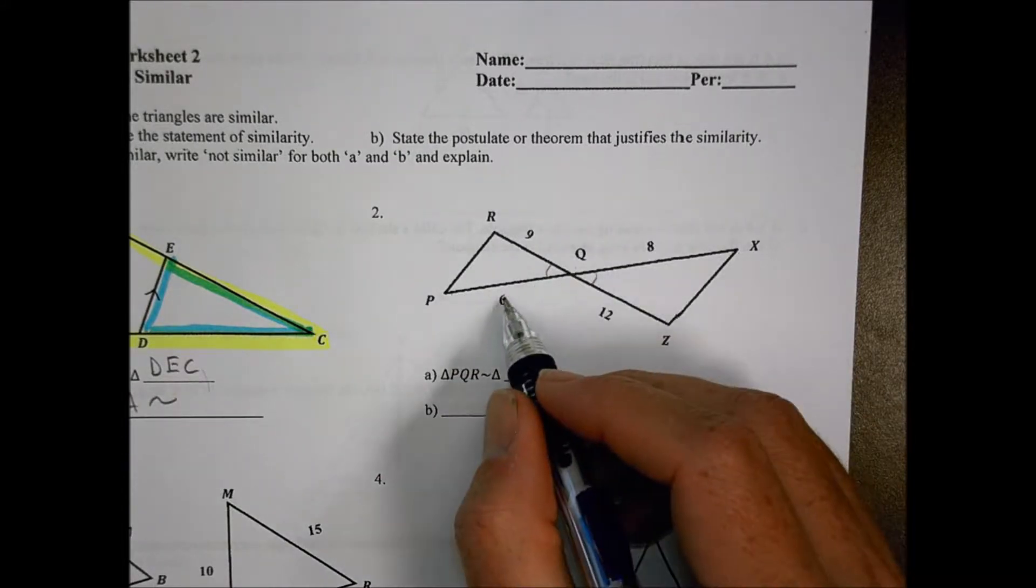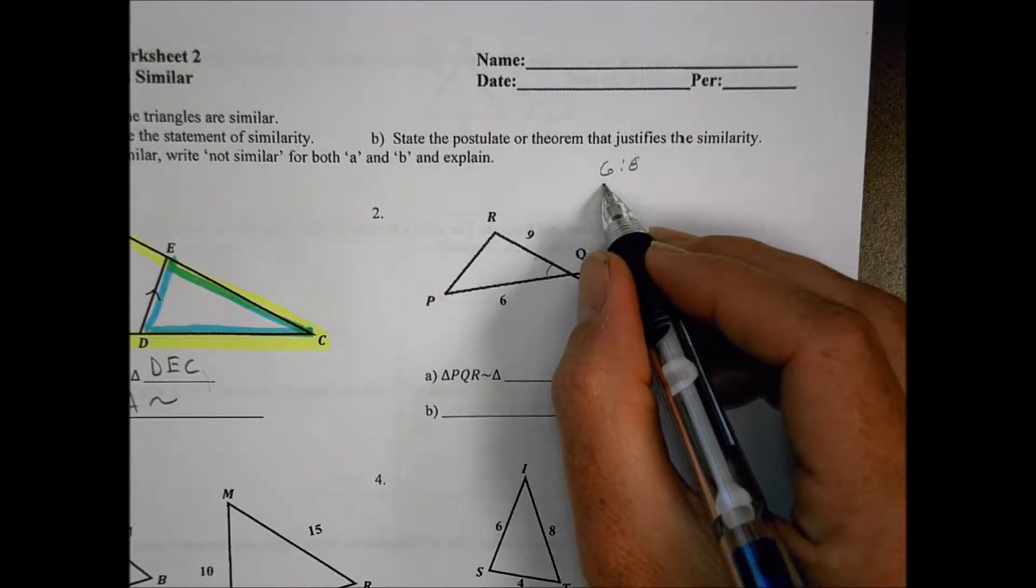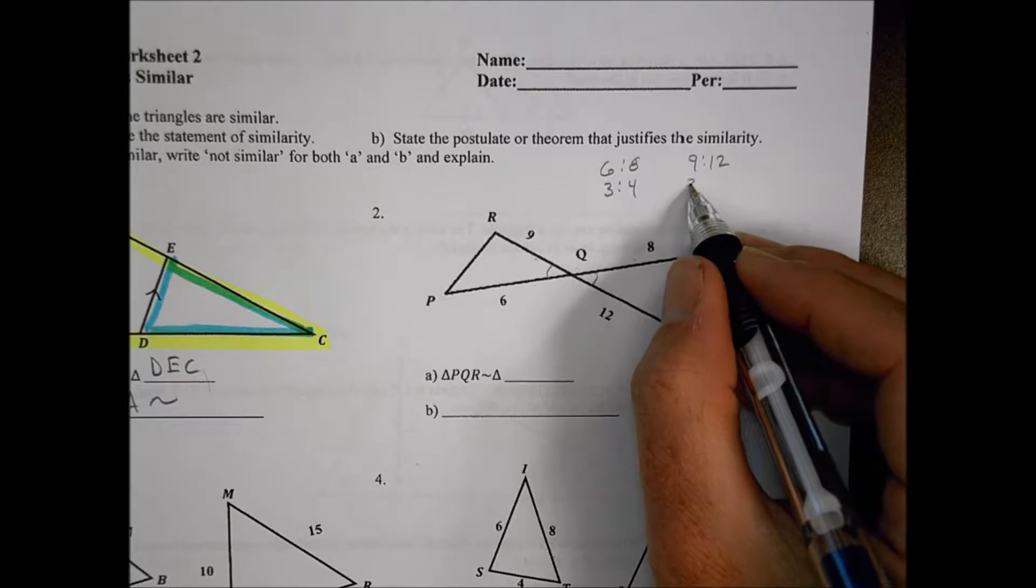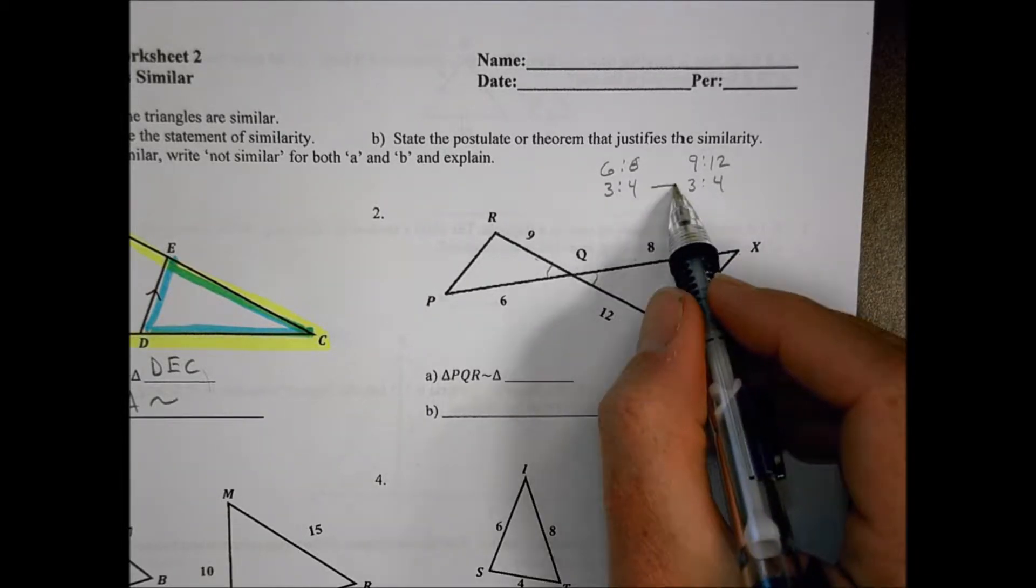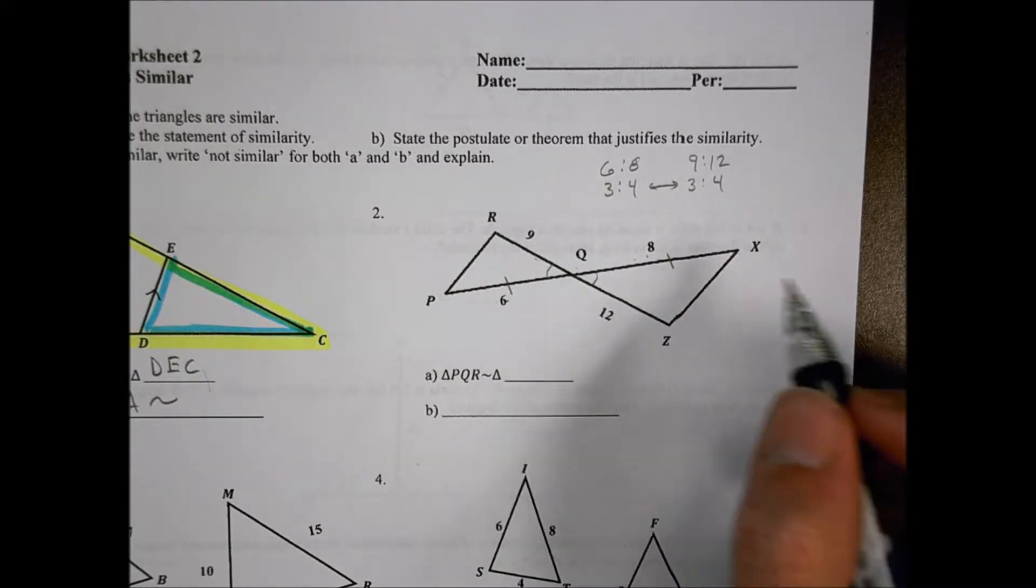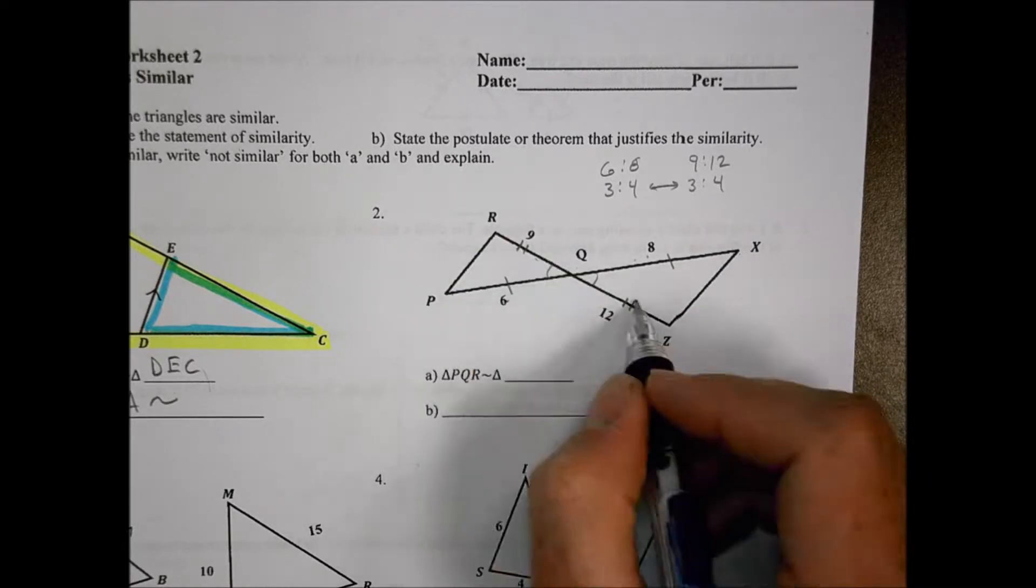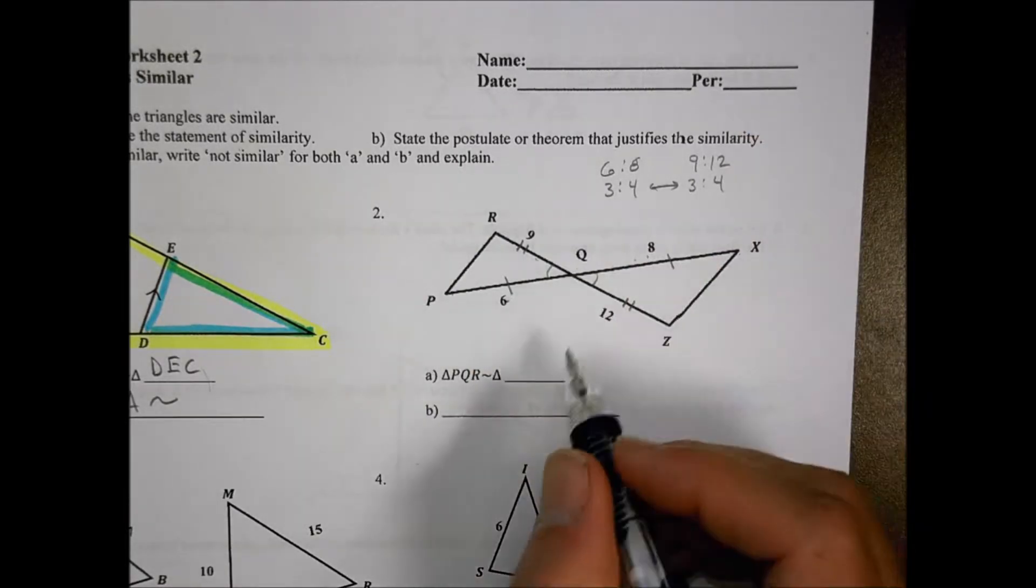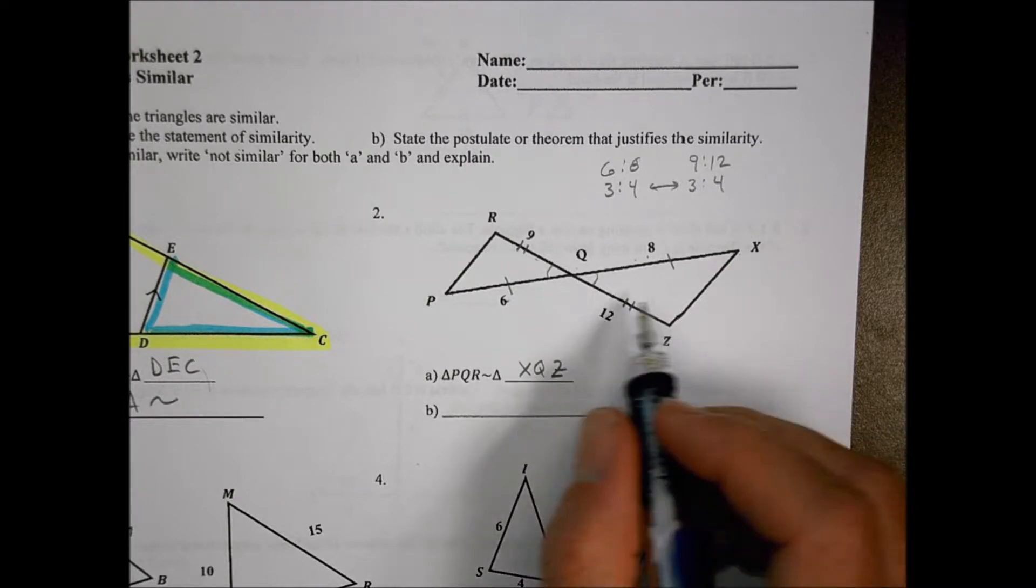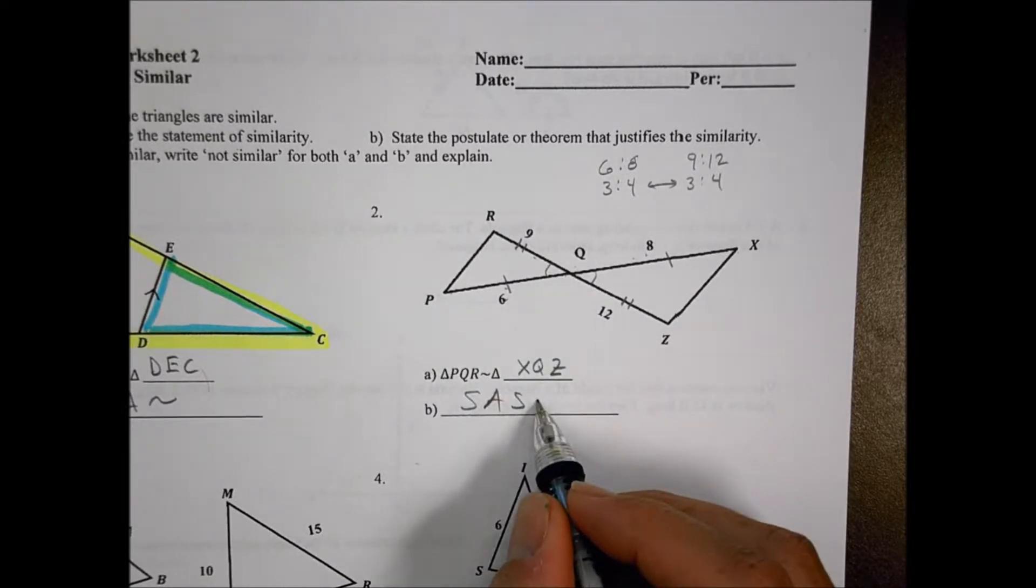Because we have some side lengths here, we have 6 to 8, 9 to 12. Notice that 6 to 8 can reduce down to 2 goes in there 3 times, 2 goes in there 4 times. Compare that to 9 to 12. 3 goes in here 3 times, and 3 goes in there 4 times. So I can see they have the same scale factor. This means that X, Q, Z is similar to that one. And the reason for that is because I have a side angle side similarity there.